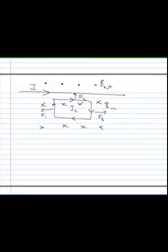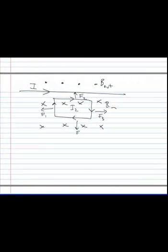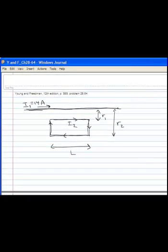On the opposite side, we've got F3 going to the right. And on the bottom, we've got F4 going down. So sides 1, 2, 3, and 4 have the forces on them that you see here.